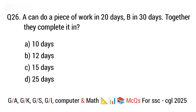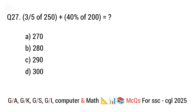Question 26. A can do a piece of work in 20 days, B in 30 days. Together they complete it in? The right answer is option B. 12 days.